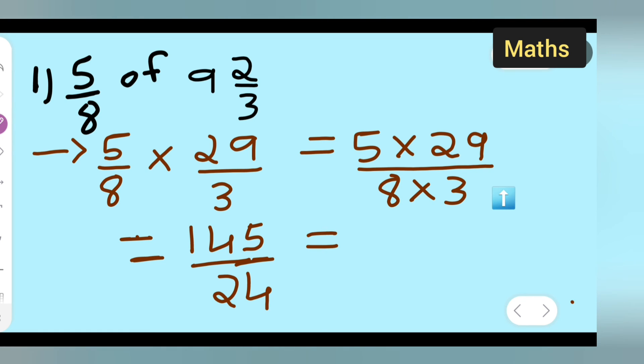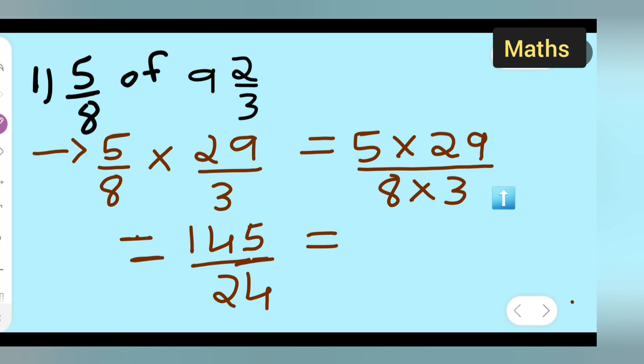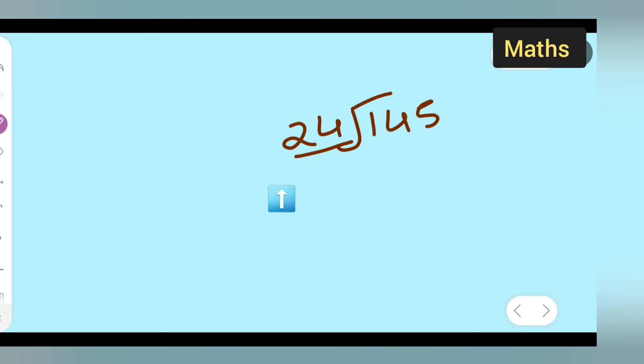Now you can divide this. 24 into 145. 24 ones are 24, so 24 sixes are 144. What is remaining is 1.